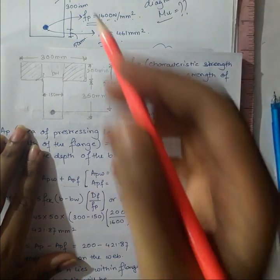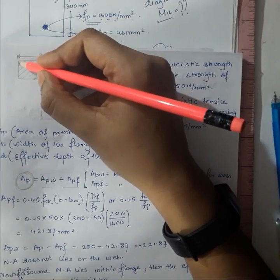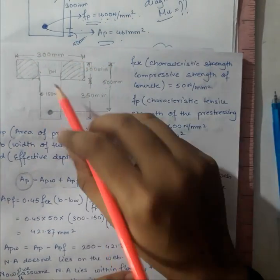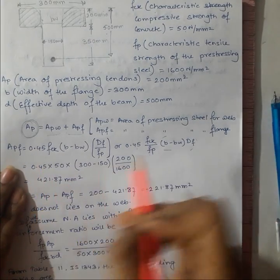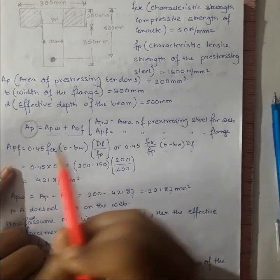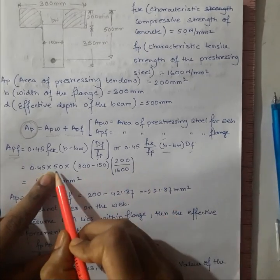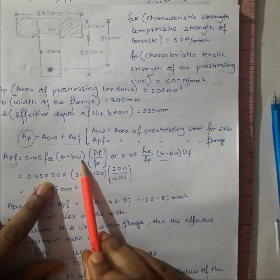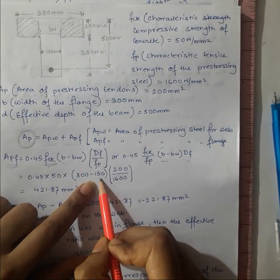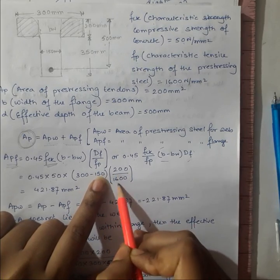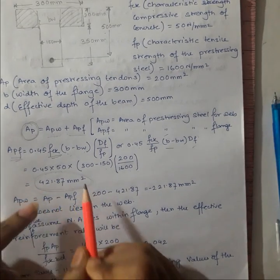df is the flange thickness. Substituting values: 0.45 × 50 × (300 − 150) × (200 / 1600). This gives us the value of Apf — the contributing area of pre-stressing steel for the flange.